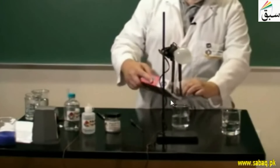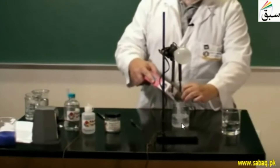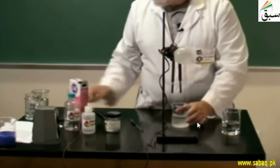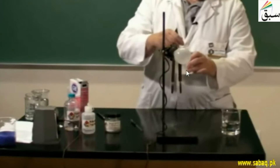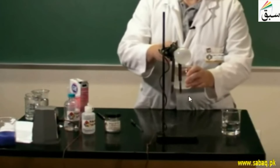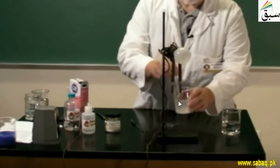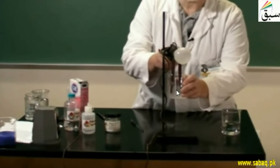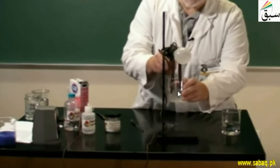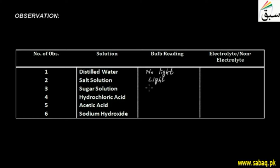Now we will test sugar. We made sugar solution with sugar dissolved in distilled water and stirred it. We dipped the carbon electrodes and the bulb light does not turn on. So we have to write this observation: no light.